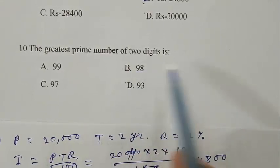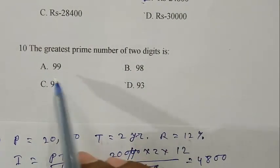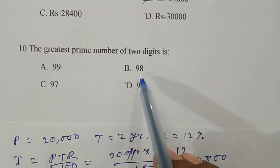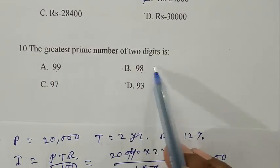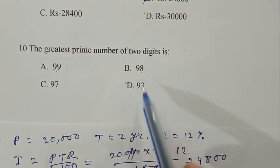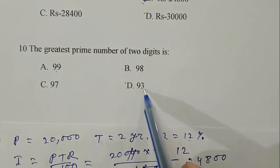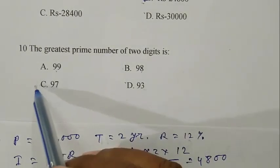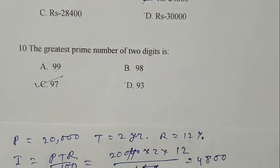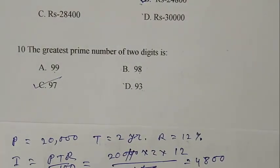Question number 10: The greatest prime number of two digits is? 99 is not prime. 98 is even, so not prime. 93 is divisible by 3. 97 is the correct answer. Thank you for watching, have a good day.